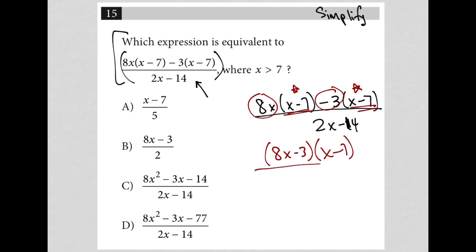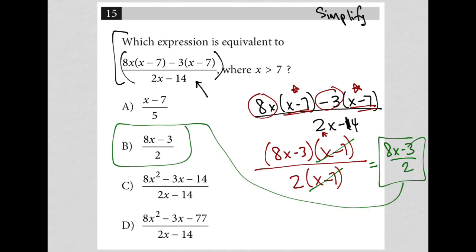I also look at my denominator and I see I can pull out a GCF of 2 and I'd be left with x minus 7 there. So that allows me to cross out or cancel out my x minus 7s and leaves me with 8x minus 3 over 2. So my correct answer here must be choice B.